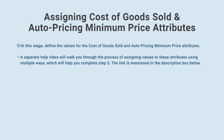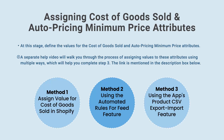At this stage, define the values for the cost of goods sold and auto pricing minimum price attributes. A separate help video will walk you through the process of assigning values to these attributes using multiple methods, which will help you complete Step 3. The link is mentioned in the description box below.